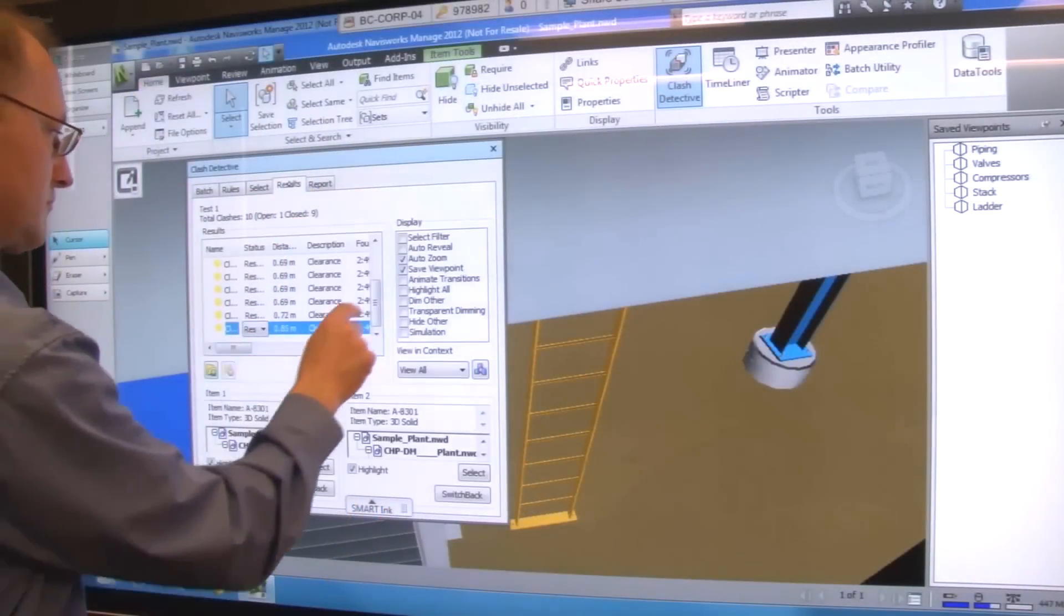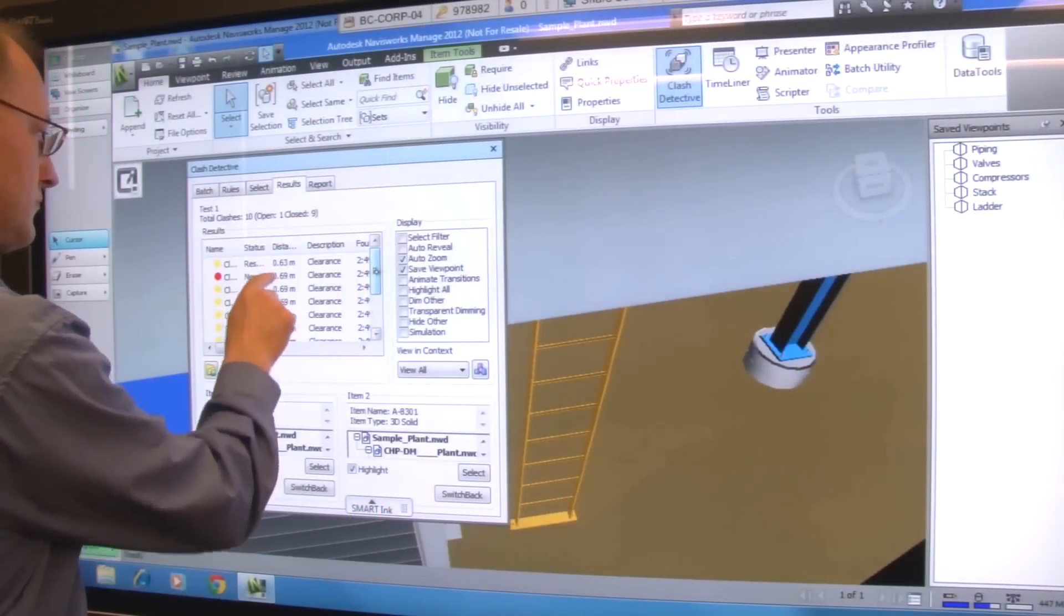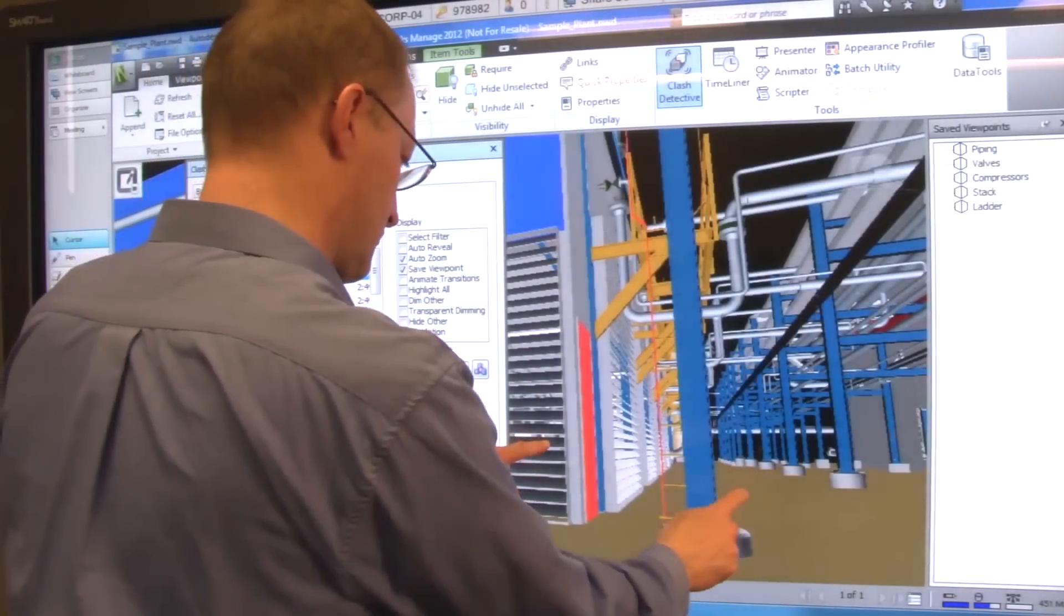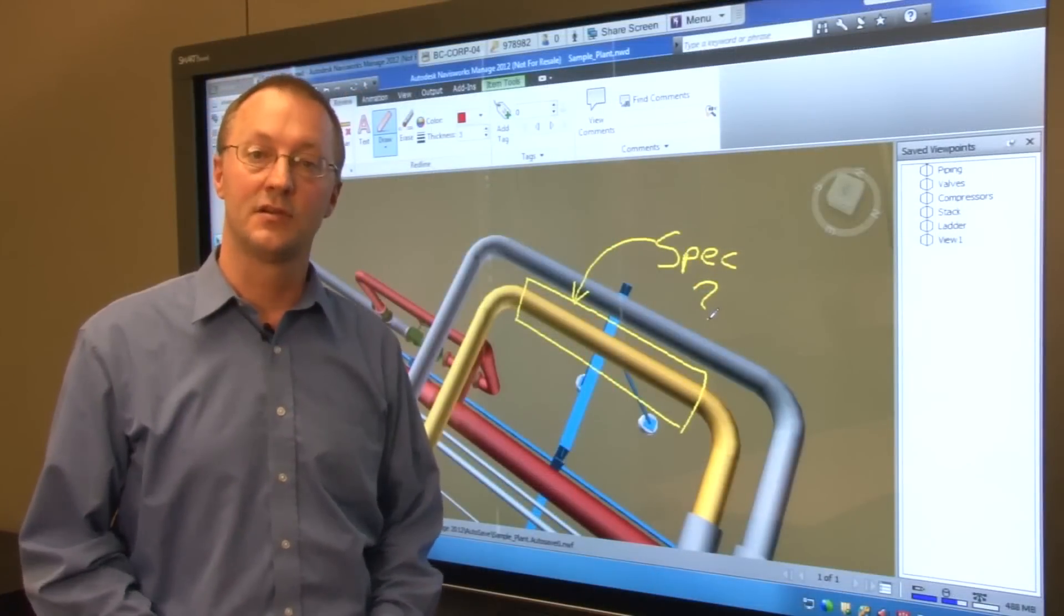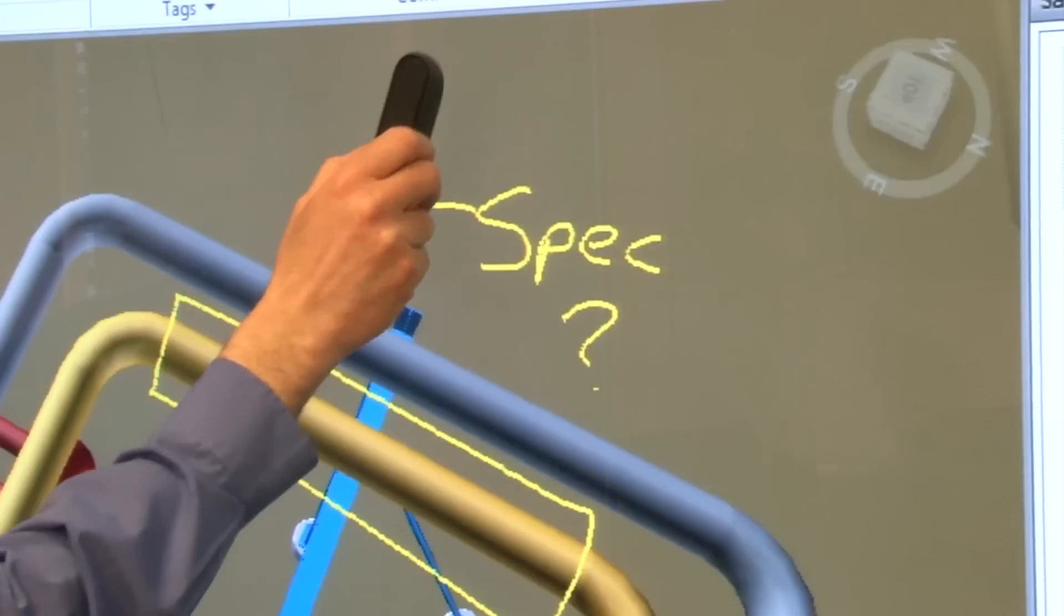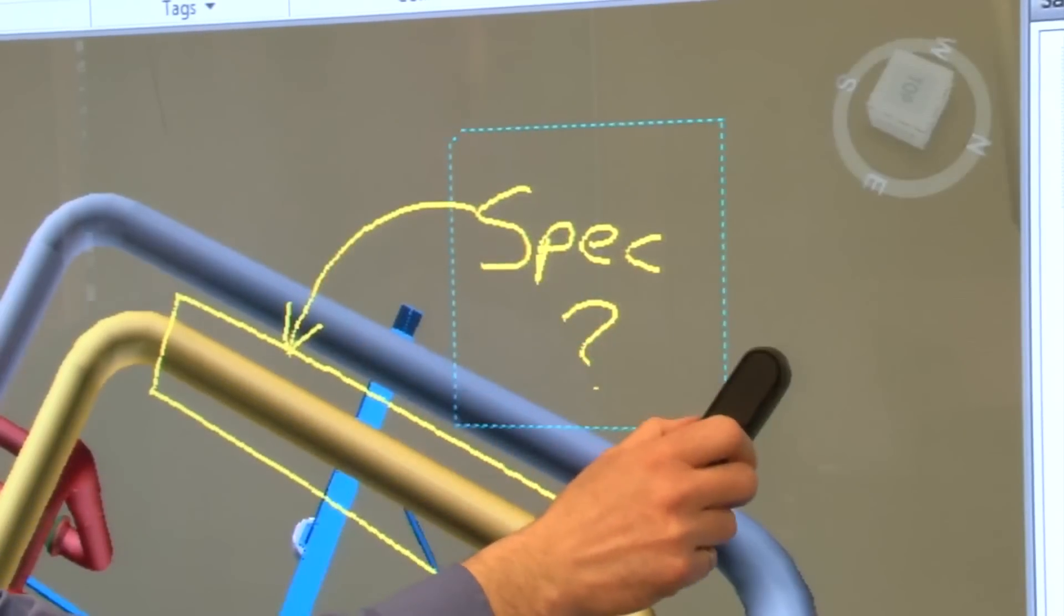You can use this same note capture capability when viewing and marking up Navisworks clash detection results. Use the pen tray eraser to erase any of your markups. The plugin maps it directly to your eraser tool.